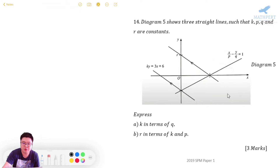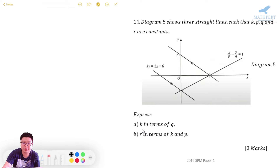We have three straight lines. This line and this line are parallel. We are asked to express K in terms of Q, and R in terms of K and P. First, we are asked to express K in terms of Q. K is here and Q is here, so we are looking at these two straight lines.